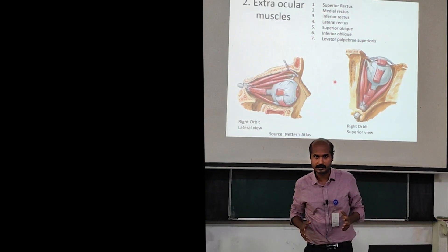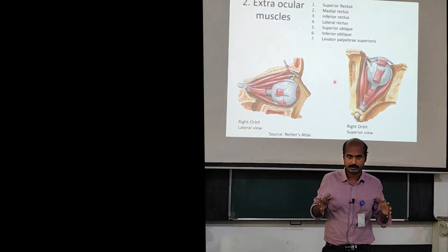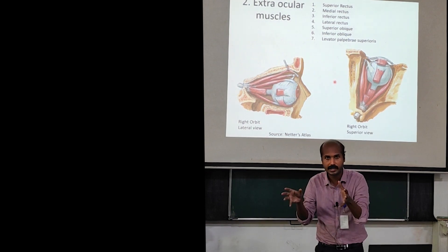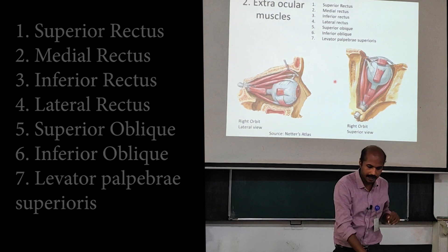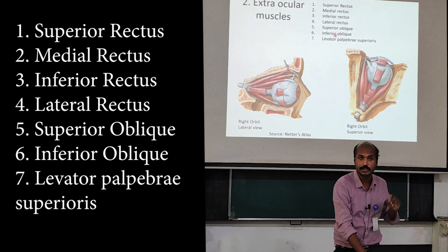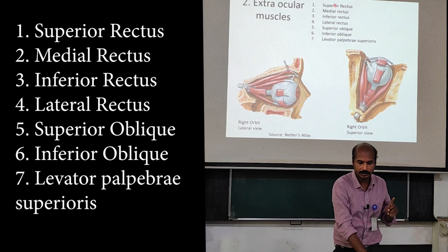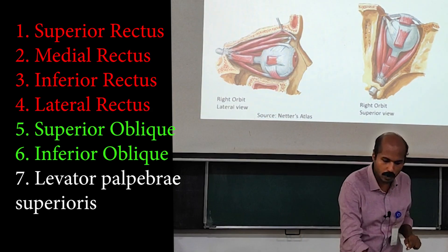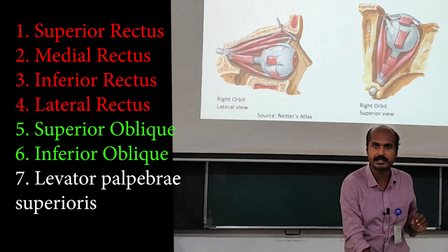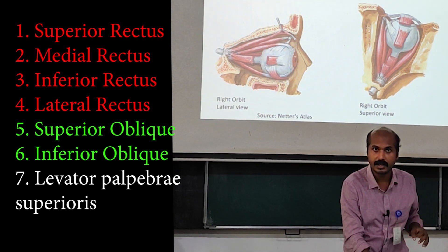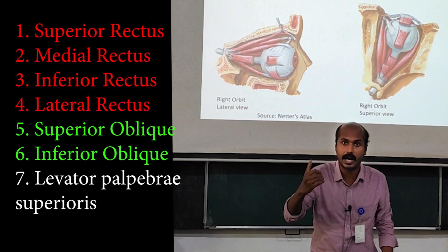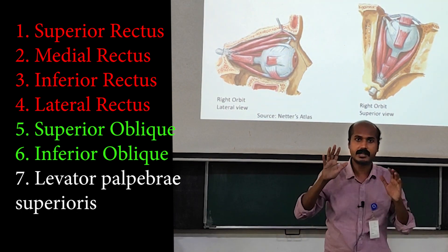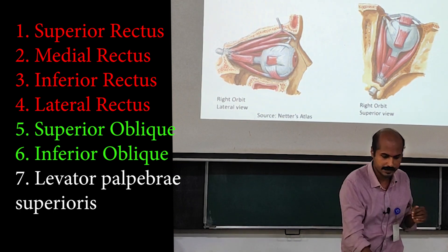Next, we go into the extraocular muscles. There are seven extraocular muscles — muscles in the orbit but outside the eyeball. Of these seven, six are attached to the eyeball. There are four recti and two obliques. The seventh is a unique muscle — the levator palpebrae superioris — which is not attached to the eyeball but to the upper eyelid.